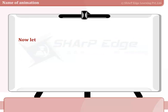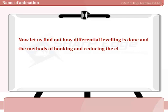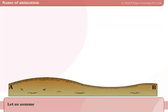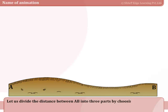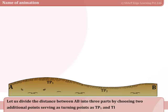Let us find out how differential leveling is done and the methods of booking and reducing the elevation of points. Let us assume a scene where leveling is to be done between two points A and B. Let us divide the distance between AB into three parts by choosing two additional points serving as turning points as TP1 and TP2.